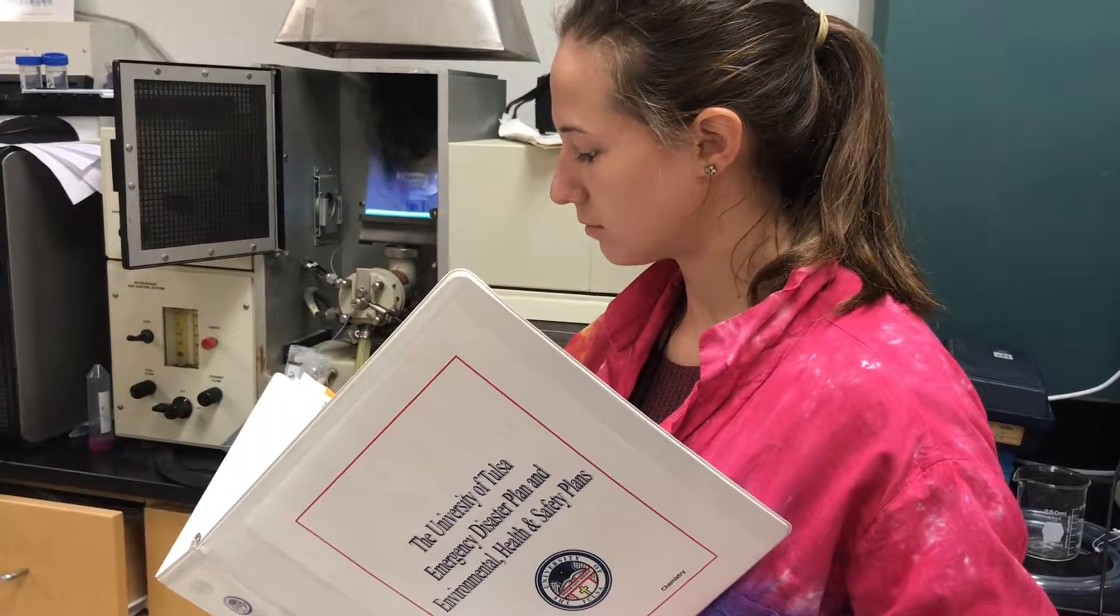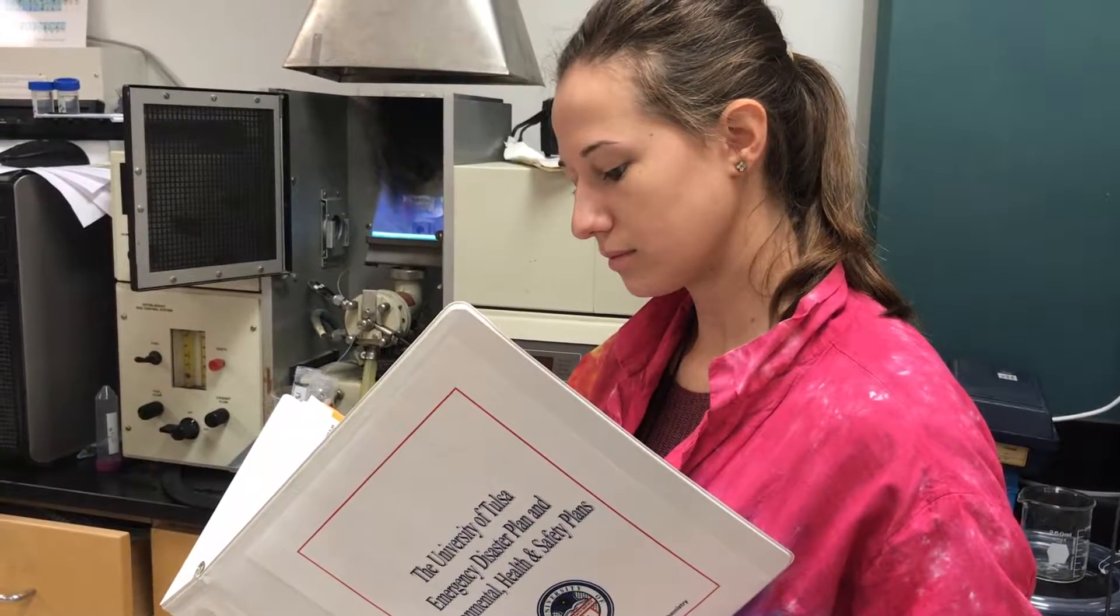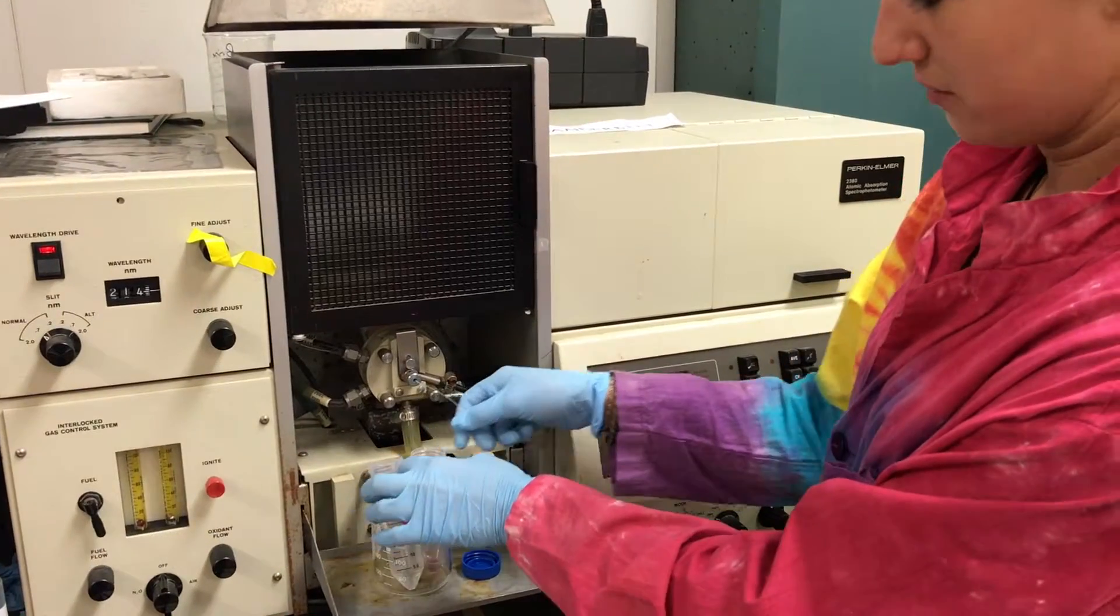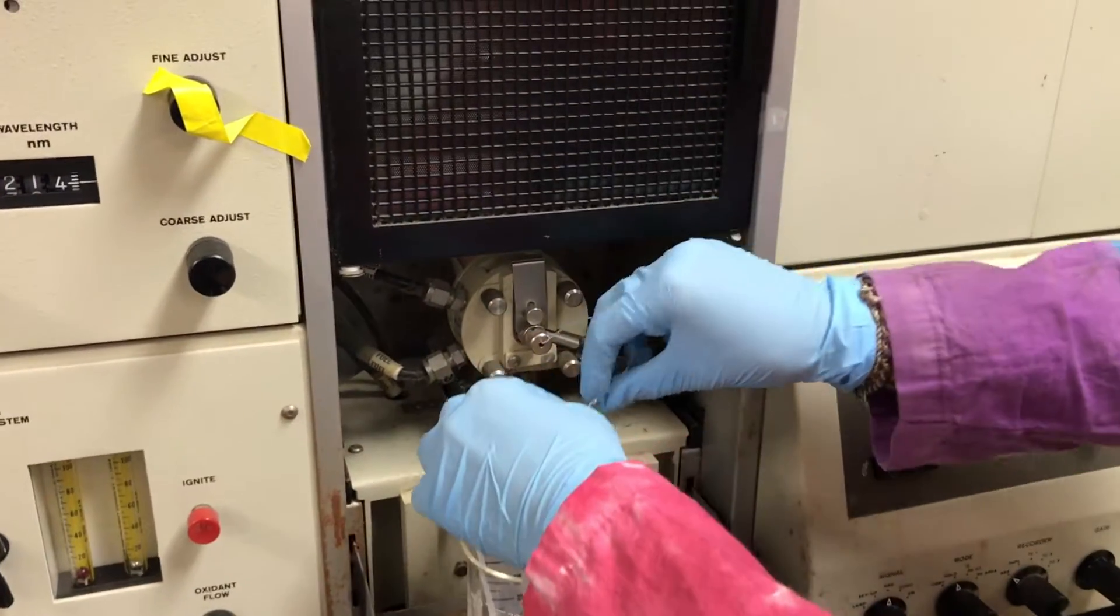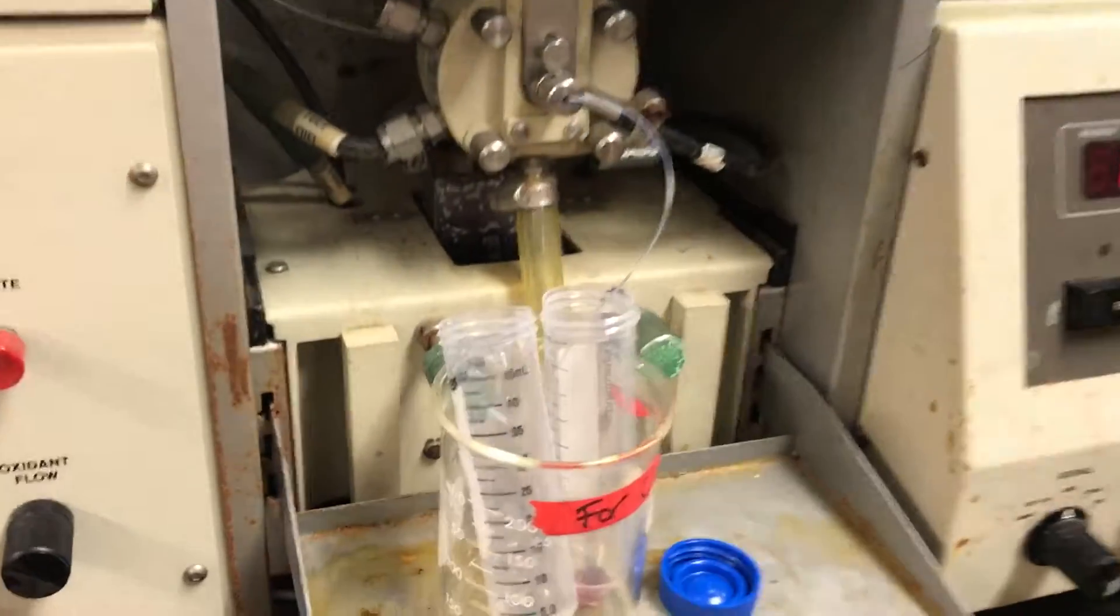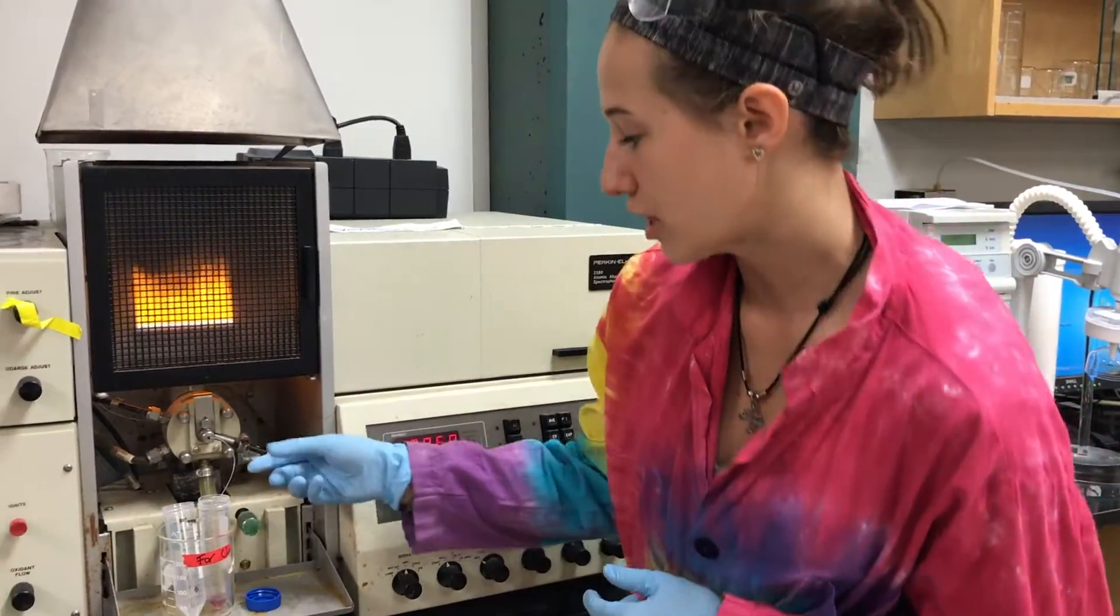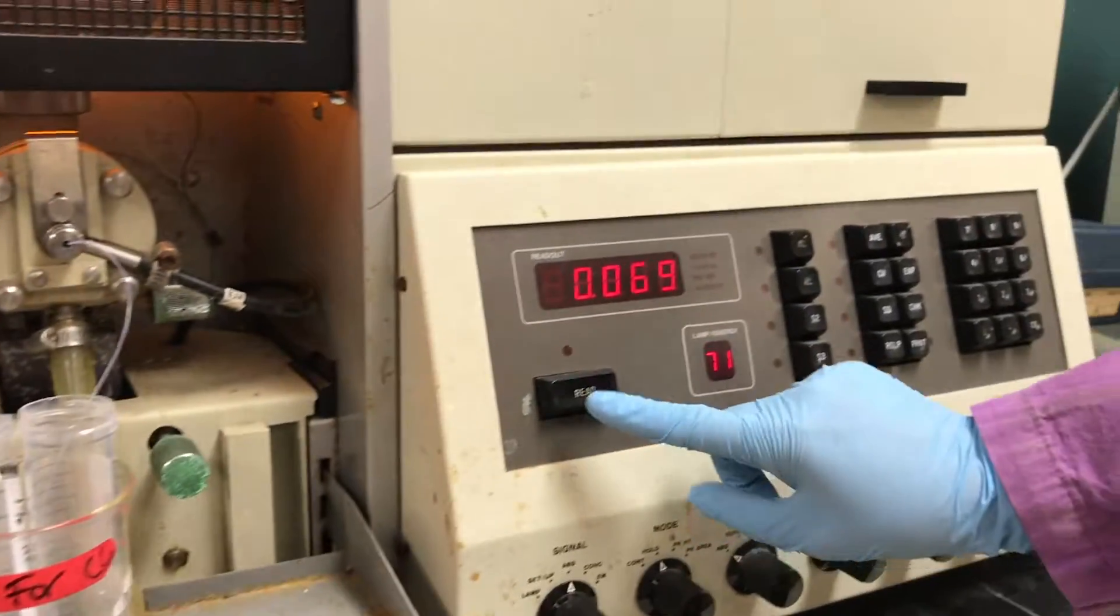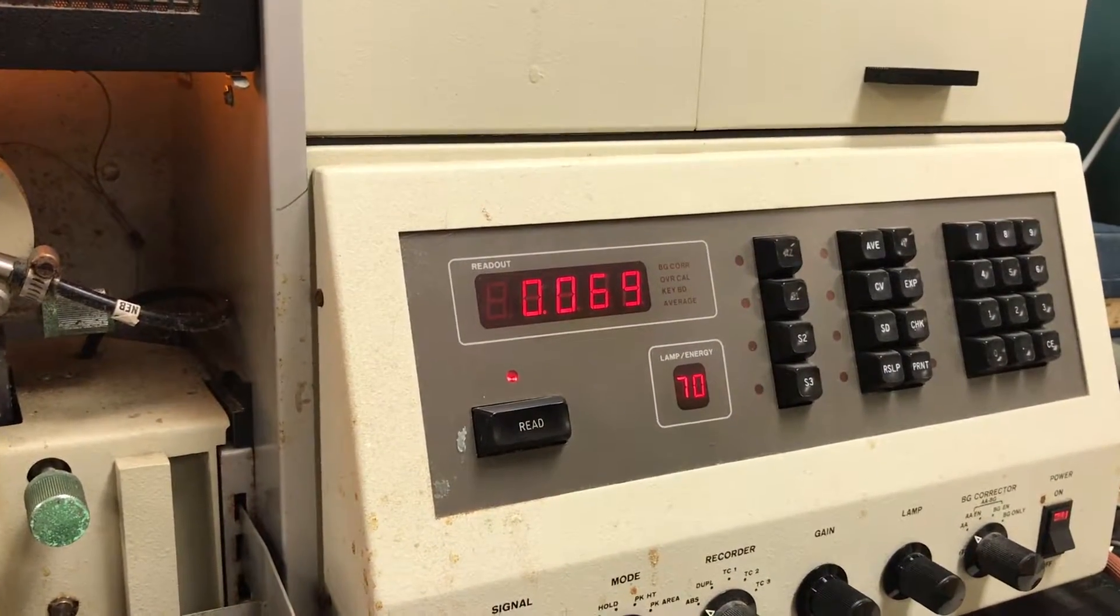Oh, the weather outside is frightful, but the fire is so delightful. Place it into the sample holder, a.k.a. beaker. Take the tube and slide it directly into your sample. The instrument is now sucking up our sample through this very tiny tube. To get a reading of absorbance, click read, and it will take an average over a five-second time frame.